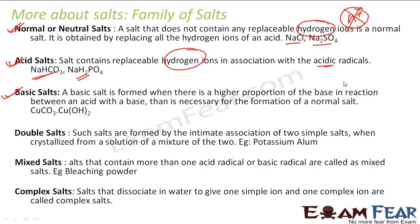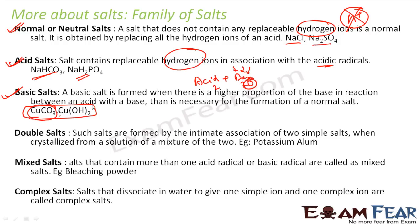Basic salts are formed when you have a higher proportion of base in the reaction between acid and base. For example, if only 2 ml of base was required but you add 10 ml of base, then 8 ml is extra. In that case, you get a basic salt — for example, CuCO3·Cu(OH)2. This is generally formed when you put a larger amount of base than required.